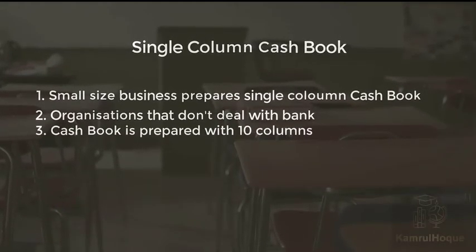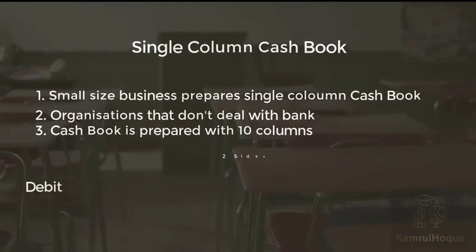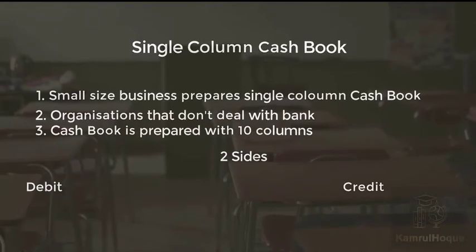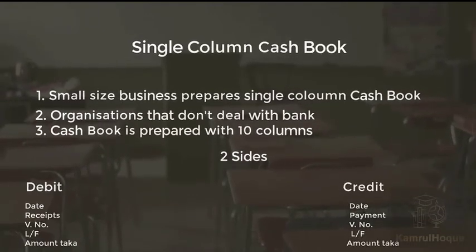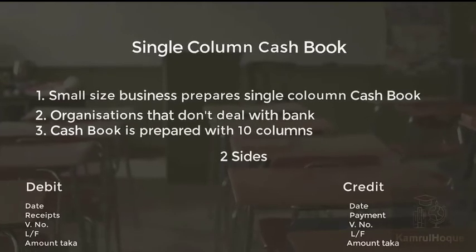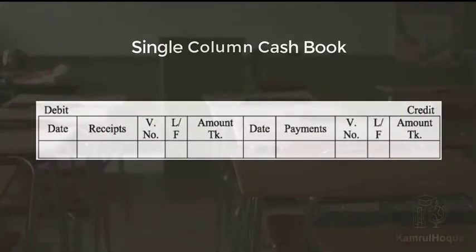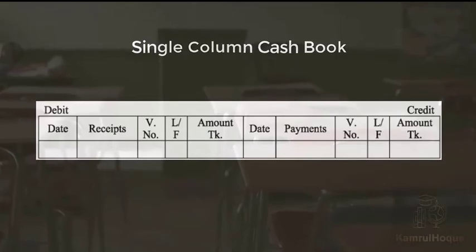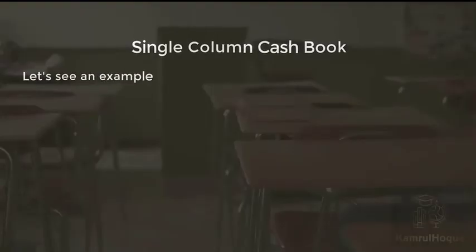The cash book is prepared with ten columns in total — five columns on each side. As usual, there are two sides: debit side and credit side. Both sides contain: date, receipts/payments, voucher number, ledger folio, and amount. Let's see an example of how it looks.